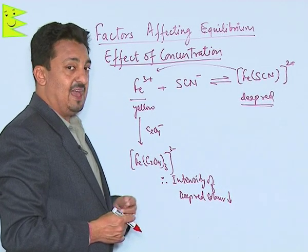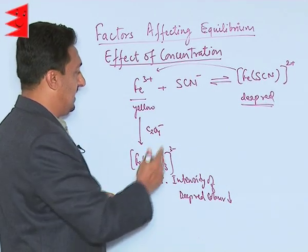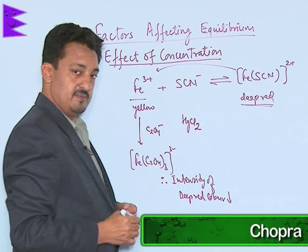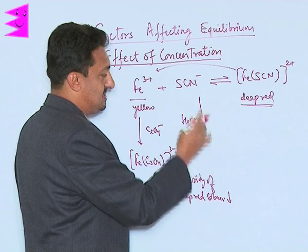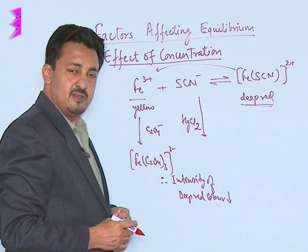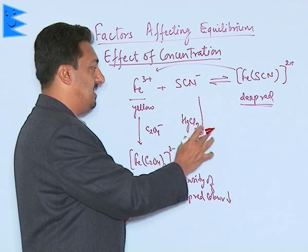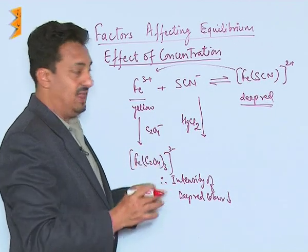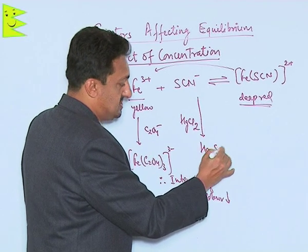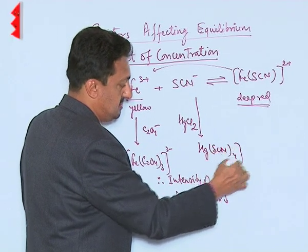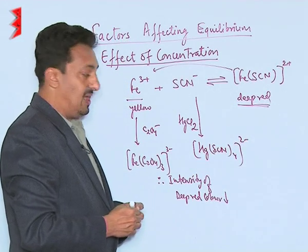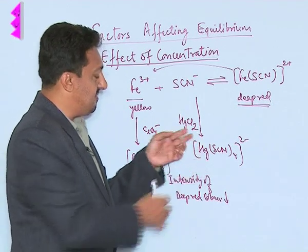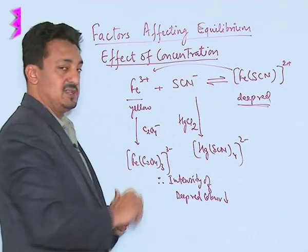The same effect can also be demonstrated by adding mercuric chloride to the same solution mixture. The mercuric chloride combines with the thiocyanate ions available in the reaction mixture and forms a very stable complex, tetra thiocyanato mercurate ion. As this complex is formed, the thiocyanate ion concentration decreases.